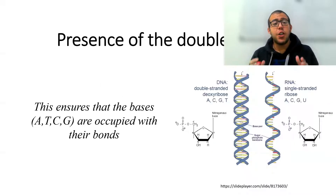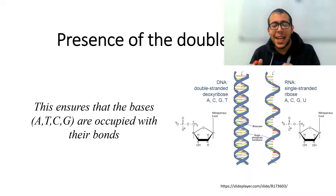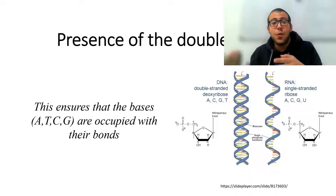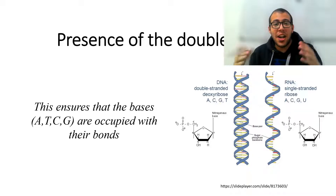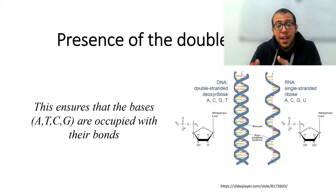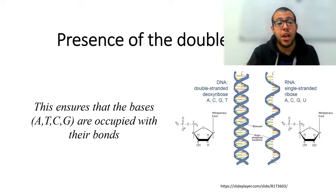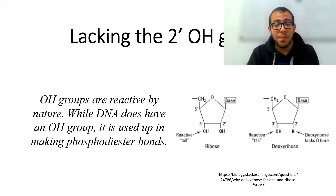First of all, due to the presence of the double strand in DNA. That ensures that the bases — A, T, C, and G for DNA — are actually preoccupied, whereas for RNA, the four nucleotides A, U, C, and G are not preoccupied, therefore making the DNA more stable.